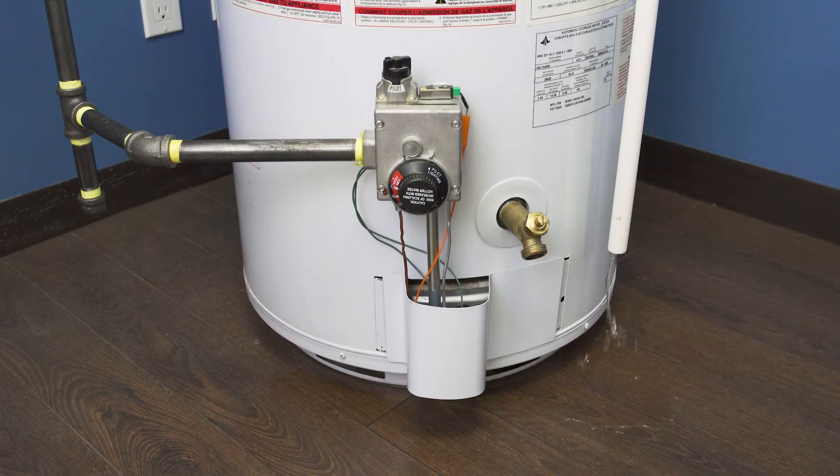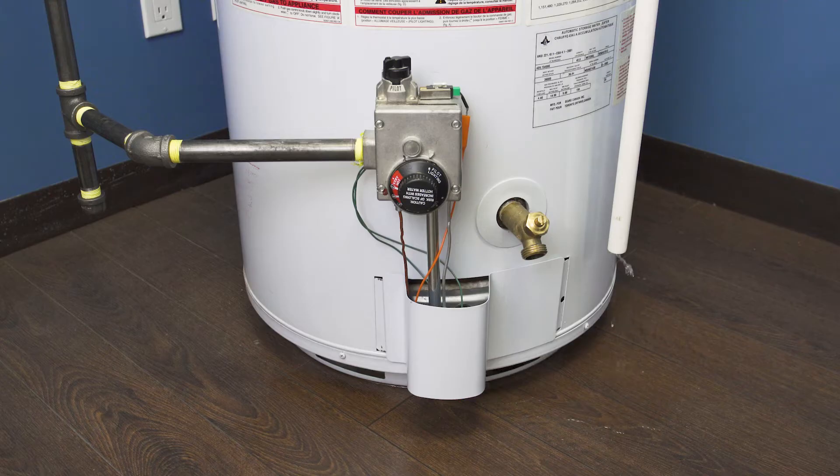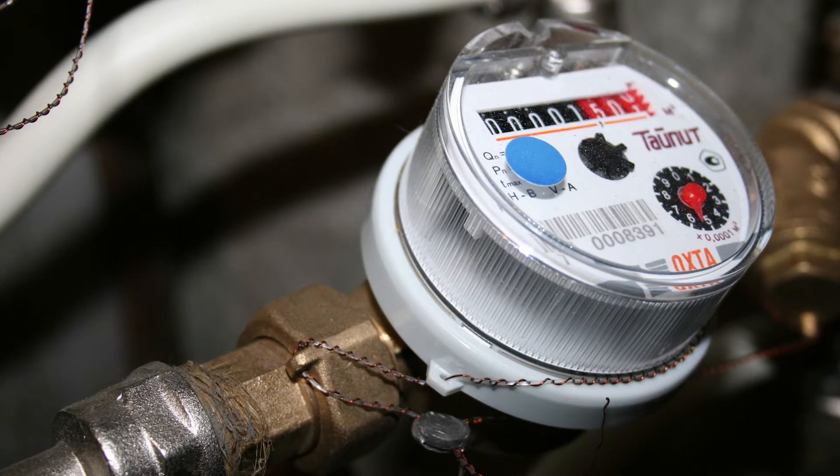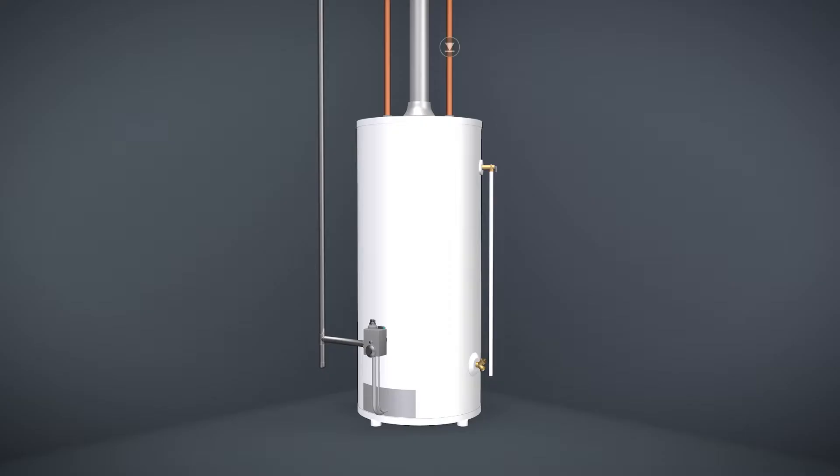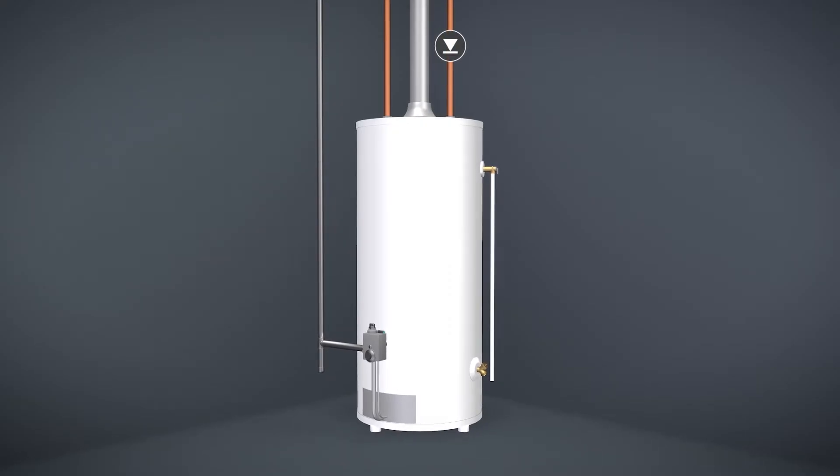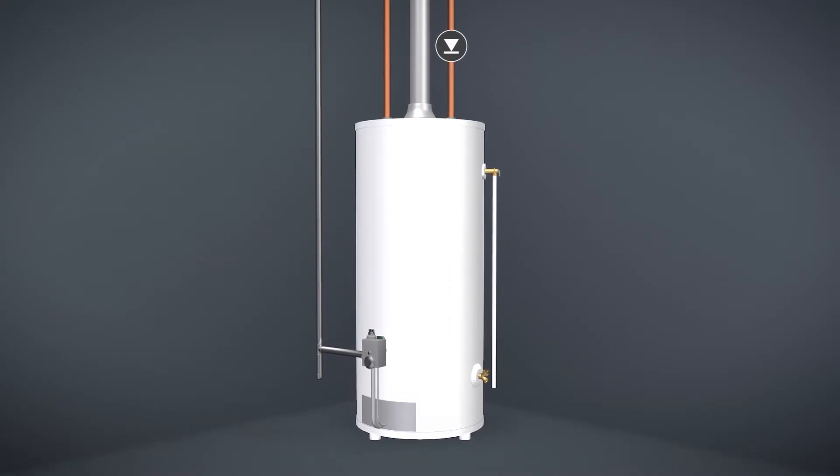If the relief valve opens intermittently or even daily, then it's most likely due to normal water pressure expansion. In some homes the water utility supply meter may contain a check valve, backflow preventer, or water pressure reducing valve. This creates a closed system.